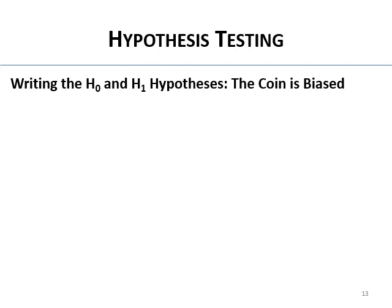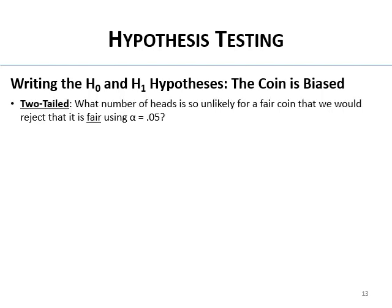Now we're moving into means instead of correlation, so we write things a little differently — instead of how r relates to zero (as we did for correlation), we'll be comparing sample means to each other or samples to a population. A two-tailed hypothesis that the coin is biased asks: what number of heads is so unlikely for a fair coin that we would reject that it's fair, using alpha 0.05?